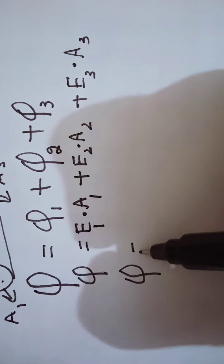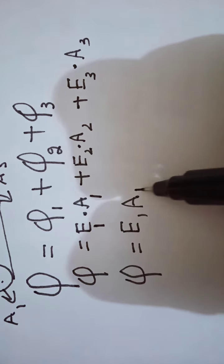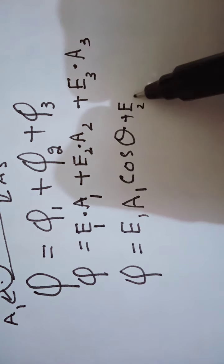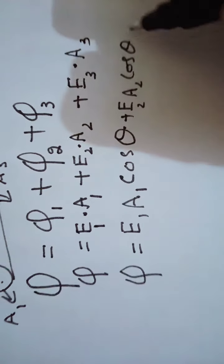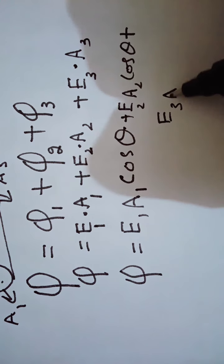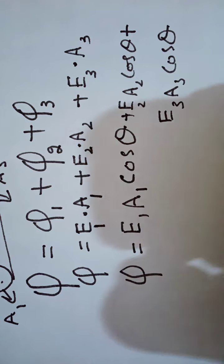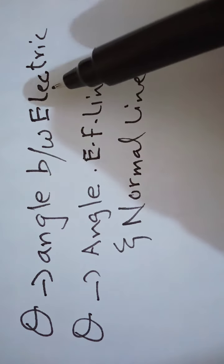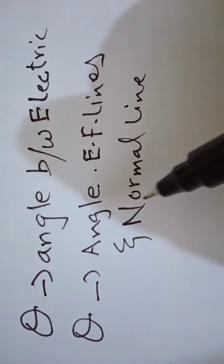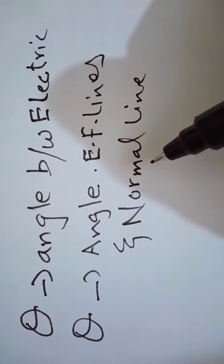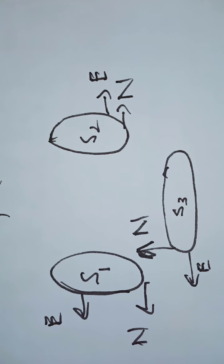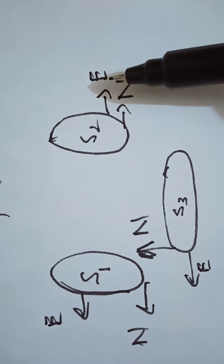Now we simplify the dot product. The dot product is resolved by taking the cosine of the angle theta: E1·A1·cos θ + E2·A2·cos θ + E3·A3·cos θ. The angle theta is the angle between the electric field lines and the normal line to the surface. The intensity direction is already shown in the figure.